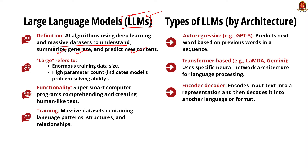What are the features of large language models? The term 'large' symbolizes two things: the enormous size of their training data and the parameter count. Parameters define the skill of the model in solving a specific problem. Secondly, they are used for general purposes — it is sufficient to solve general problems based on the commonality of human language regardless of specific task. To put it simply, large language models are like super smart computer programs that can comprehend and create human-like text, trained on massive datasets containing patterns, structures, and relationships within languages.